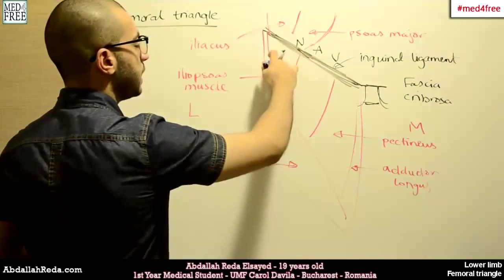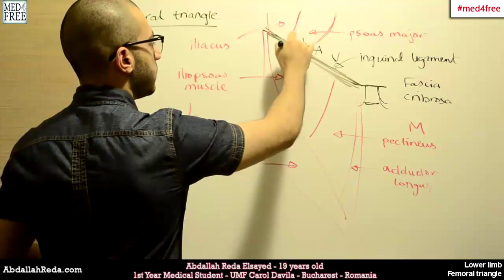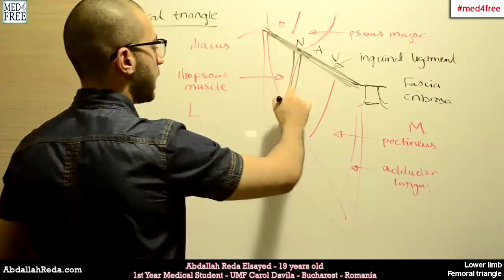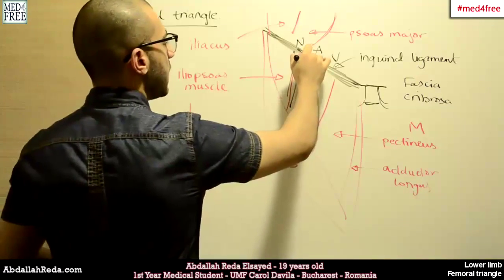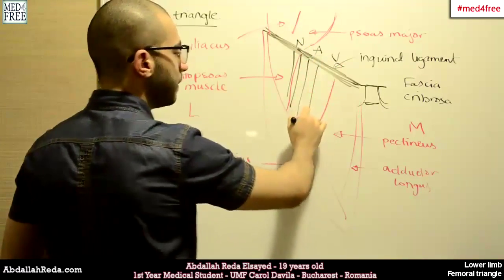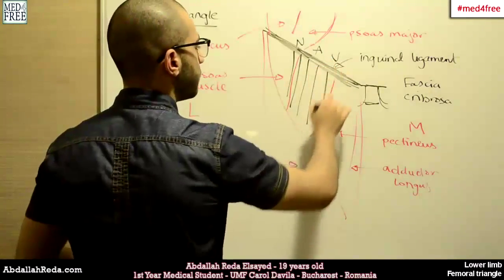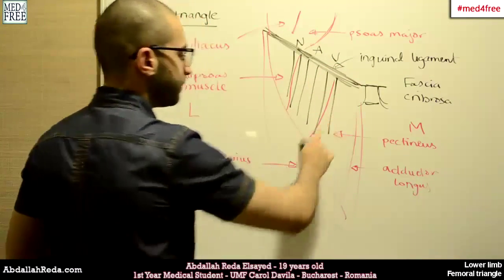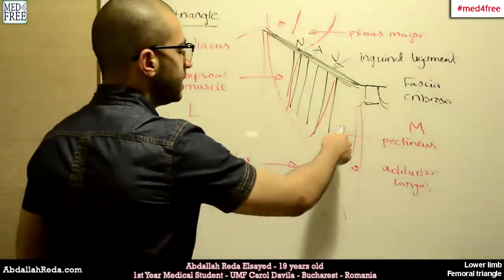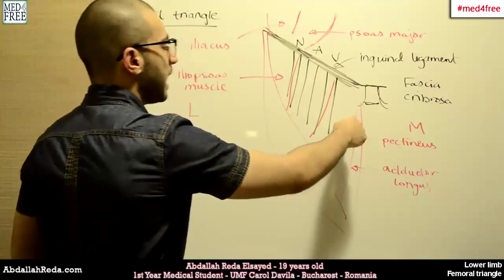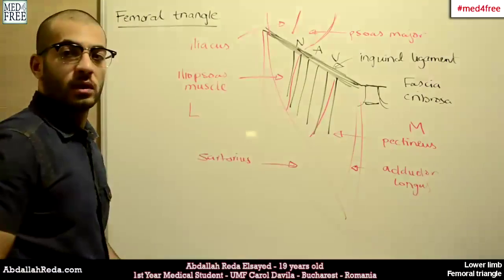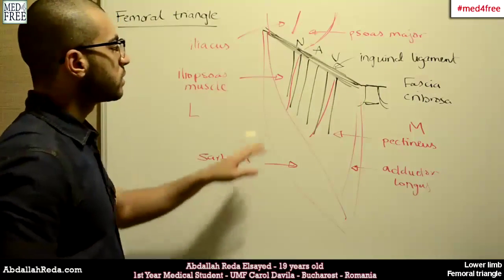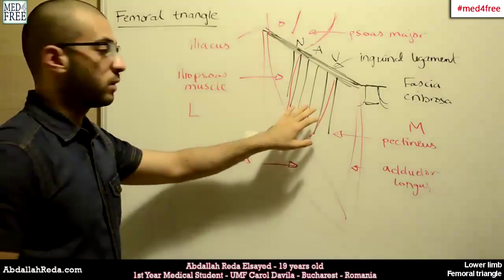Most laterally, we have the femoral nerve with its branches. And then, we have the femoral artery. And most medially, we have the femoral vein. Also, medial to the vein, we have the deep inguinal lymph nodes. These are the contents of the femoral triangle.